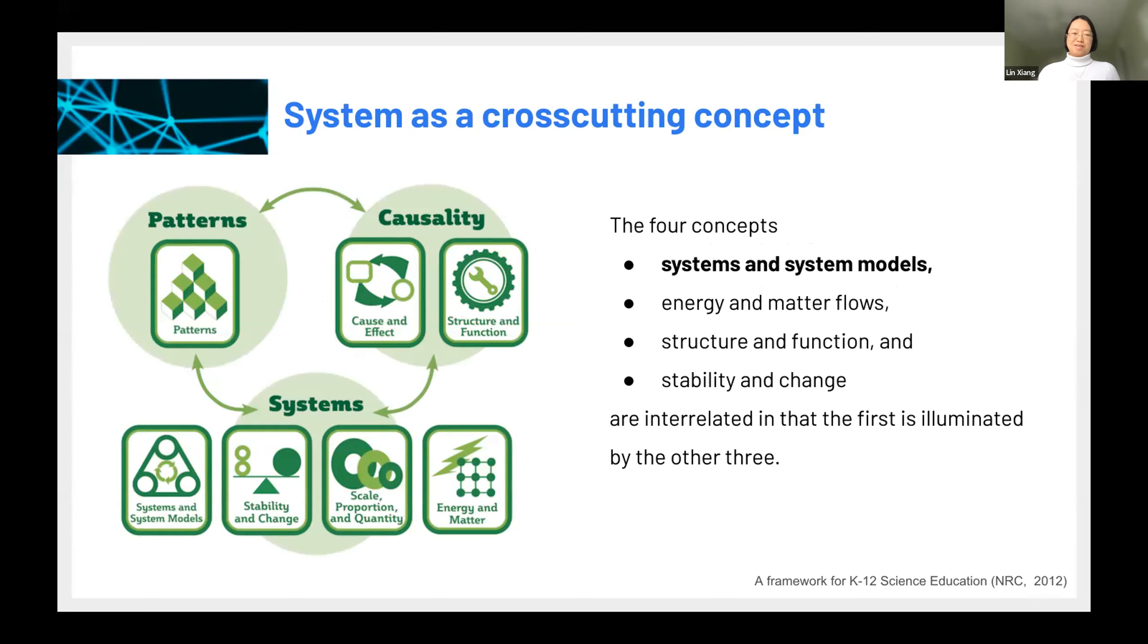And then in the next generation science standards, system is defined as a cross-cutting concept. And if you look closer, you can see the seven cross-cutting concepts are grouped into three big groups. And the biggest one pretty much is a system. So it contains four cross-cutting concepts. And basically, you can use that to really illustrate a system in terms of the change, in terms of the energy and matter change and flow, in terms of scale and etc. So the system become really important tool for students to learn about the natural world and scientific knowledge.